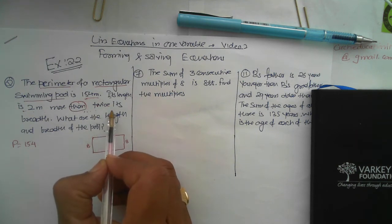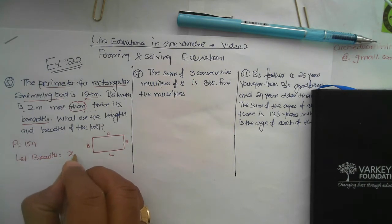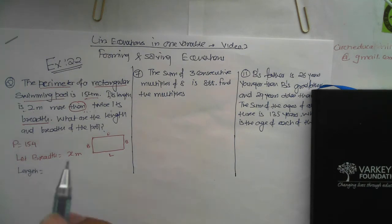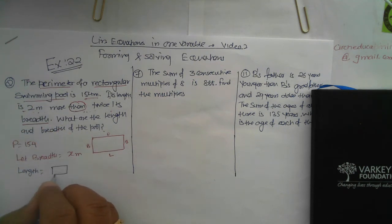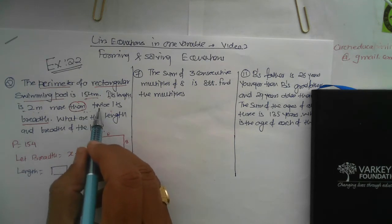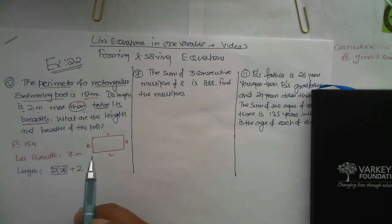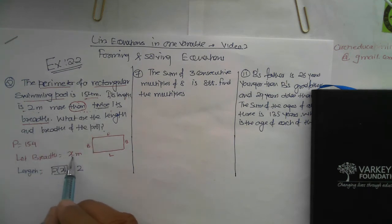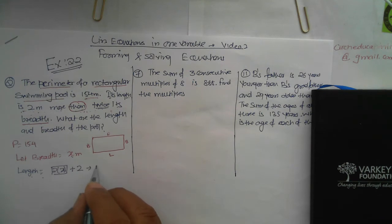Twice its breadth — so let the breadth be x meters. Now the length: reading step by step, 'length is' means equals, 'two meters more than' means add two, 'twice its breadth' means two times x. So the length is 2x plus 2.